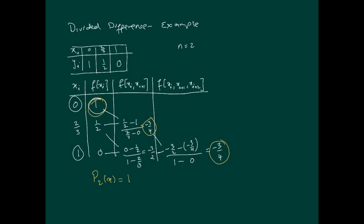So we'll put the 1 plus, we'll have the second coefficient, the a's. Remember, these are the a's, minus 3 over 4, and then we'll have x minus x0, which happens to be 0. And then plus we'll have the next coefficient, which is minus 3 over 4, and that will be multiplied by x minus x0 into x minus x1, which is 2 thirds. So that basically forms our polynomial.